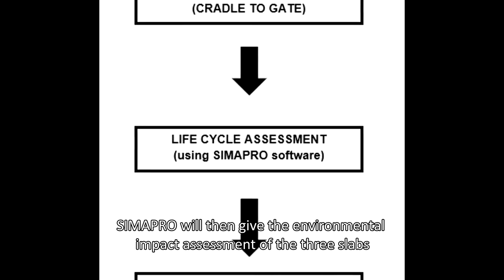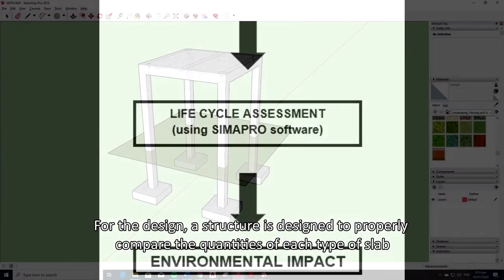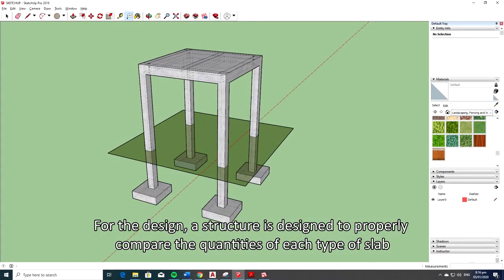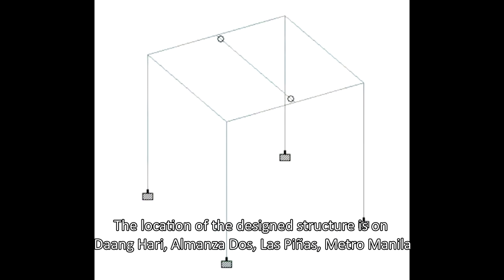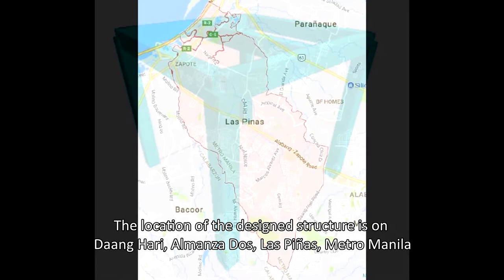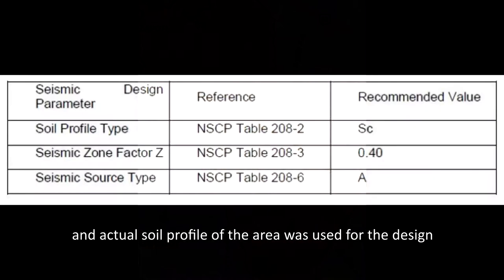CIMAPRO will then give the environmental impact assessment of the three slabs. For the design, a structure is designed to properly compare the quantities of each type of slab. The location of the designed structure is in Anghari, Almanza 2, Las Piñas, Metro Manila, and actual soil profile of the area was used for the design.